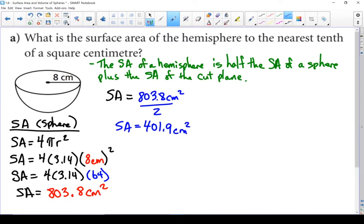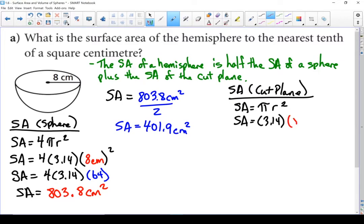Now let's do that round cut plane on the top. And that is just a circle. Put in what we know. And let's calculate that. Surface area of that cut plane is 201 square centimeters. Let's put it all together and find our total surface area.